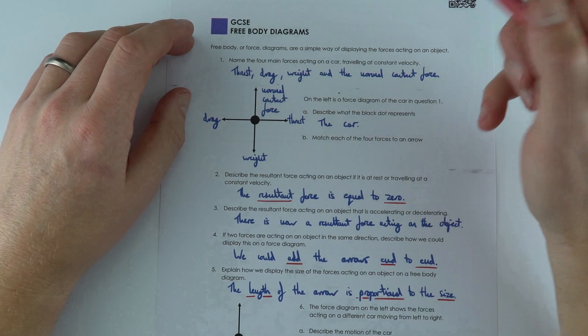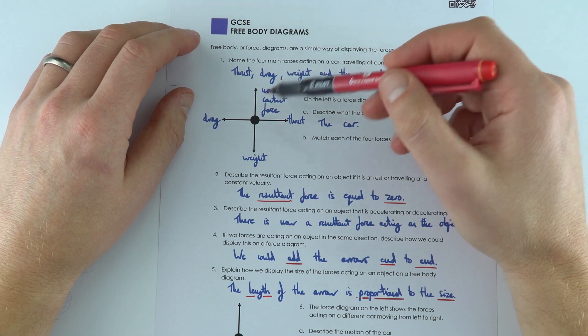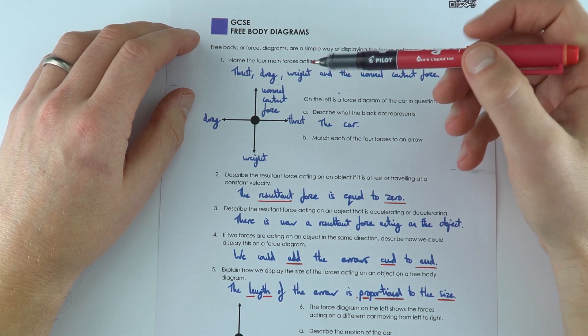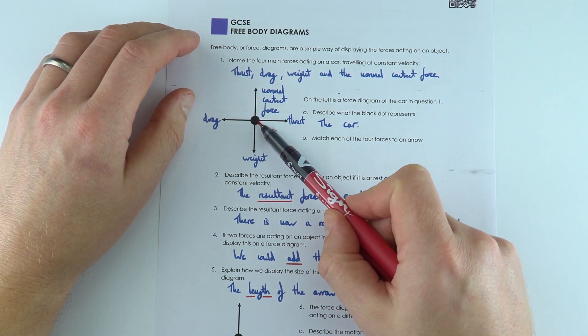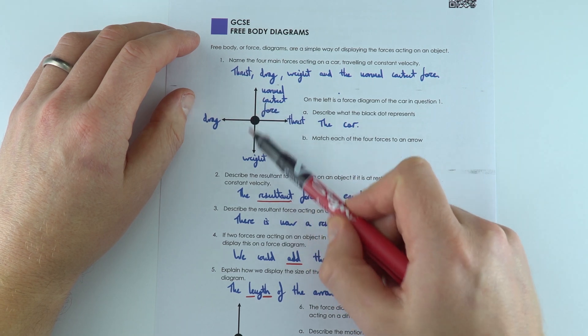In this worksheet, what we're looking at are ways to represent the forces acting on objects with simple diagrams. So we've just got this dot here which represents a car, and then we've got the different arrows acting on it.